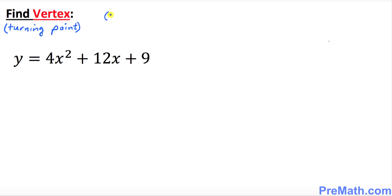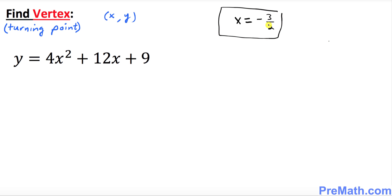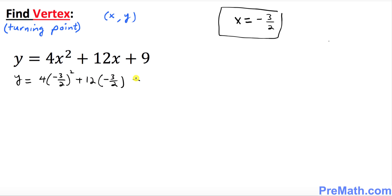The vertex is nothing more than an x-y point. In the previous step we already found that x equals negative 3 over 2 from the axis of symmetry. Now let's plug that into the equation to find y. So y equals 4 times (negative 3 over 2) squared, plus 12 times negative 3 over 2, plus 9.